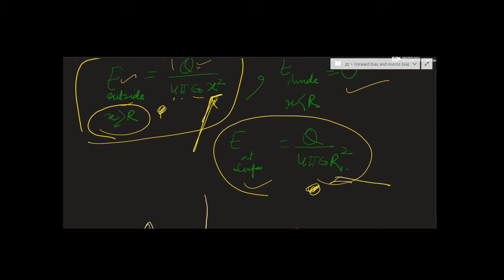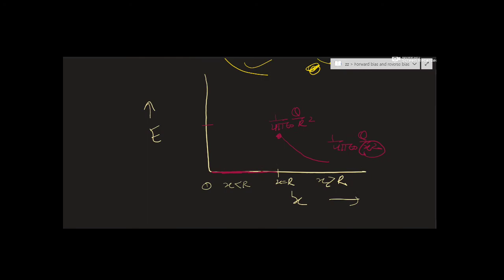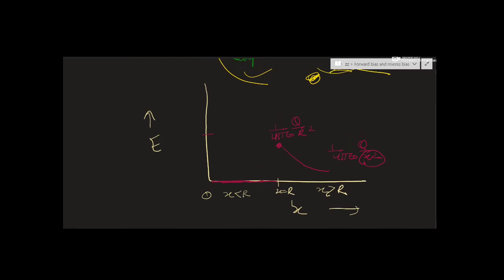Now for the graph, which is most important. Label the axes: electric field E on the vertical axis and distance x on the horizontal axis. Label the regions: x less than R is inside, x greater than R is outside, and x equal to R is the surface point.